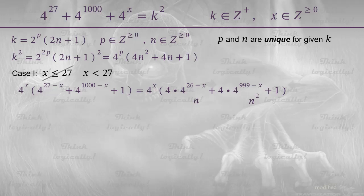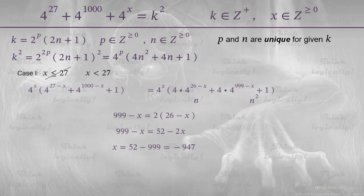This may happen only if 999 minus x is 2 times 26 minus x. This is a simple equation for x, which is no problem to solve. However, the result is a problem. It is negative, while x is supposed to be a non-negative integer. What a shame. But we've got experience of dealing with that stuff. And we have another case in reserve.